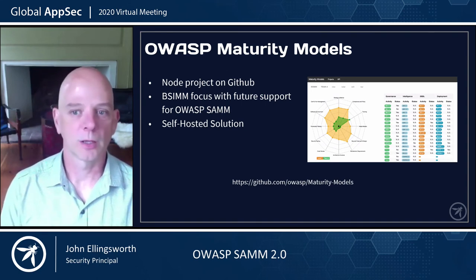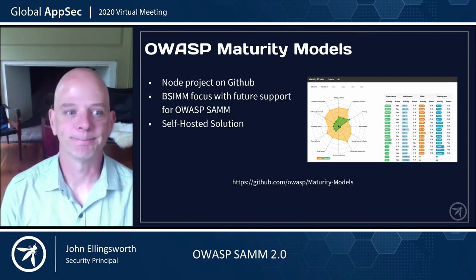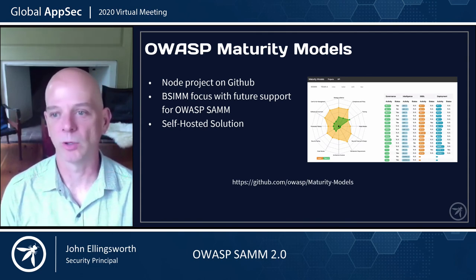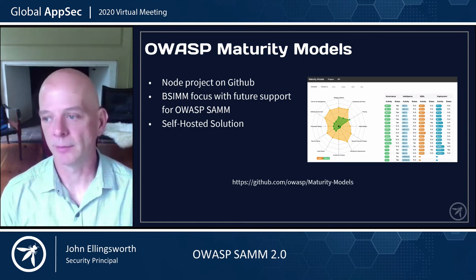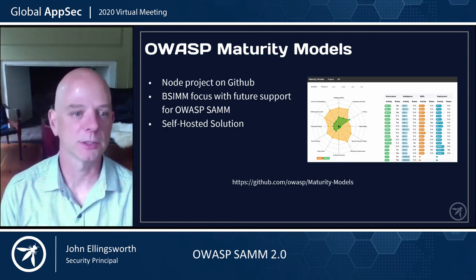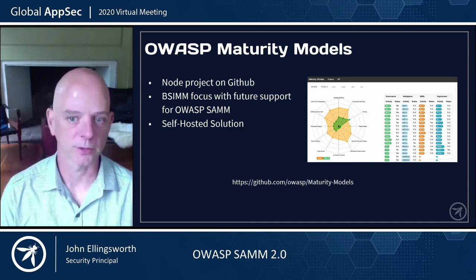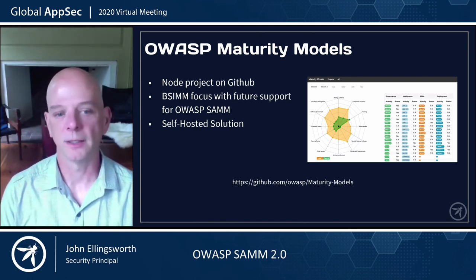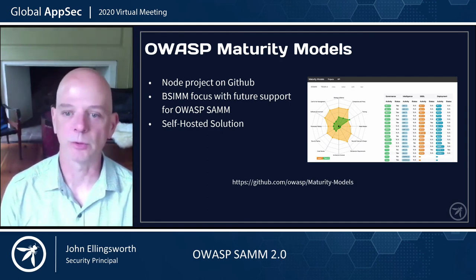OWASP Maturity Models is a Node project on GitHub that has been primarily focused on BSIMM — another maturity model more focused on a descriptive approach of maturity and what organizations are doing. It does have some integration with OWASP SAMM as shown in the screenshot. It's a self-hosted solution, and it may be worth exploring, though it's not certain whether it's been updated to 2.0.